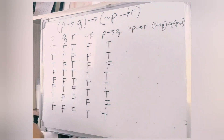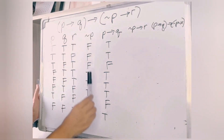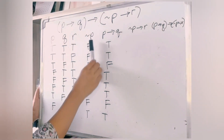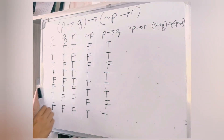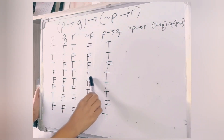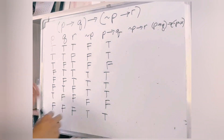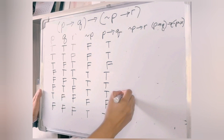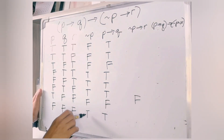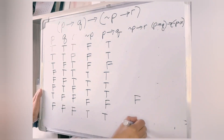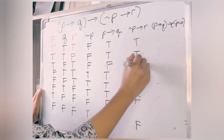Next, we focus on not P implies R. Not P is located in its column and R is in its column. We look for rows where not P is true and R is false — those are the false cases for this conditional. We find two such rows: true implies false is false, and true implies false is false. The rest are true.